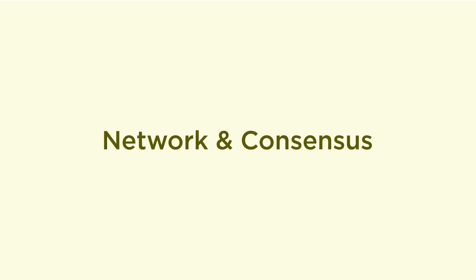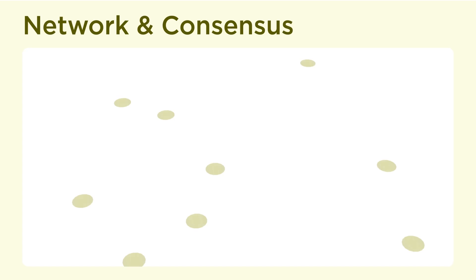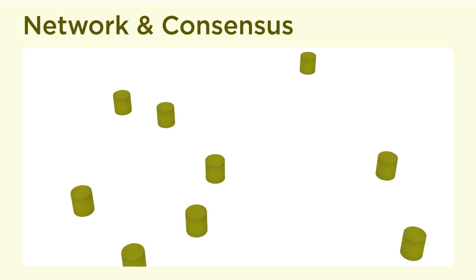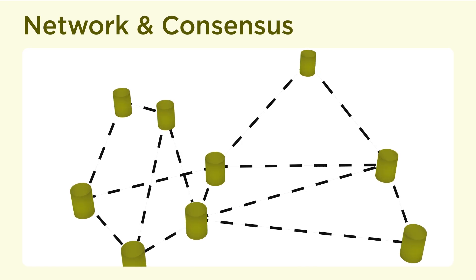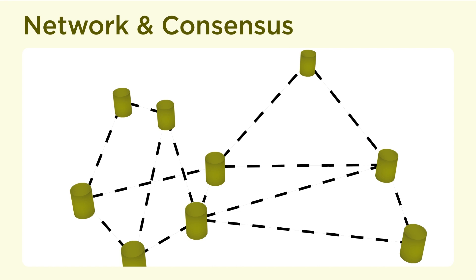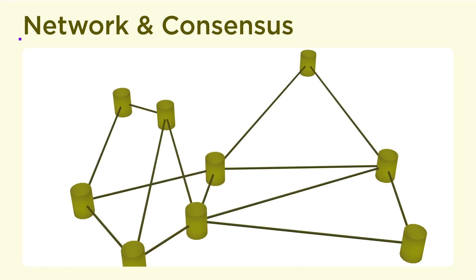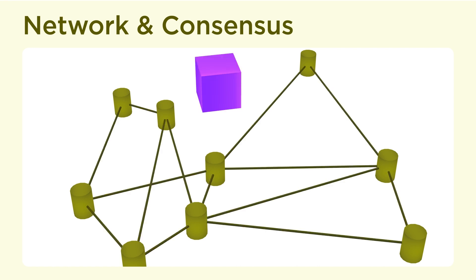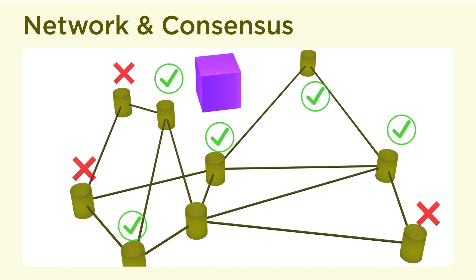Next is networking and consensus. Blockchains are replicated databases across multiple computers, so you need something that sends out new data across the network — this is called networking. And it requires these computers to agree on what data is getting added — this is called consensus. There are lots of different networking and consensus protocols, but Cosmos's Tendermint handles both of them.